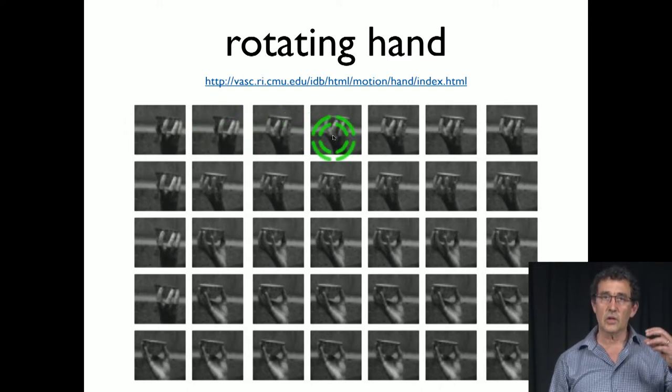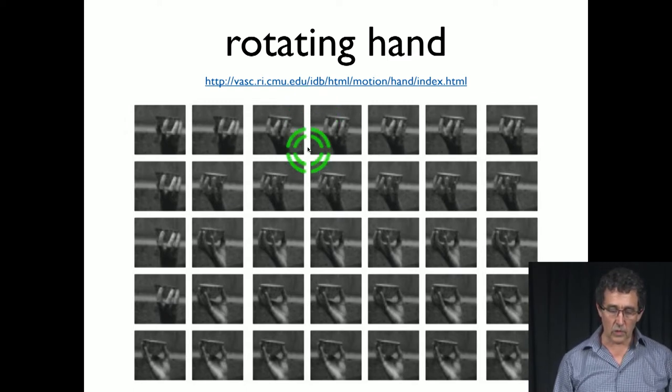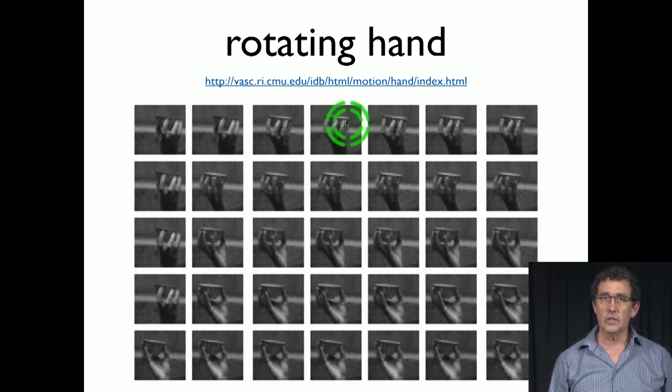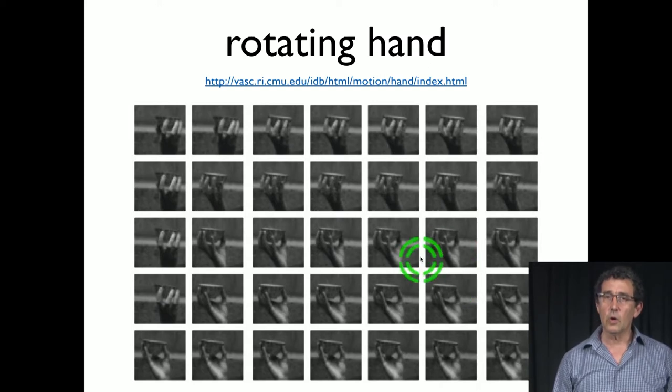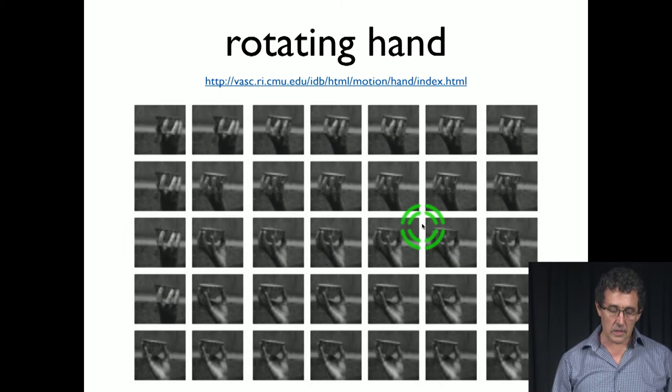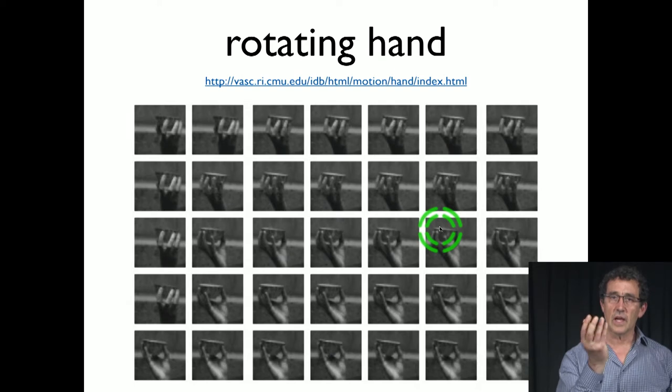It's a data point in a very high dimension because let's say that this is around 100 by 100, so this would be a data point in dimension 10,000. That's the embedding dimension. And what we want to say is, is this data set somehow representing something lower dimension? What we hope to get is that it's essentially one-dimensional, because there's really just one parameter that is changing, which is the angle of the hand.